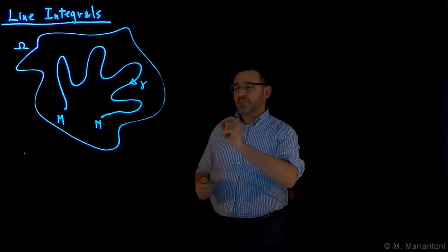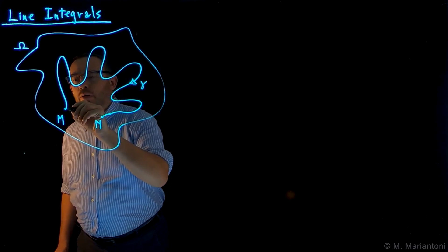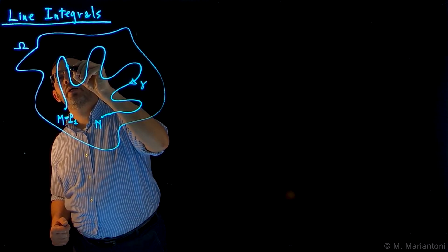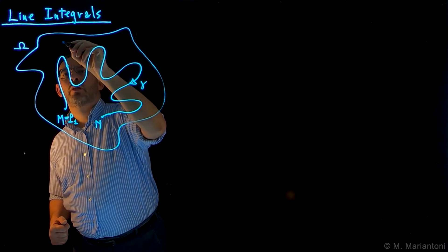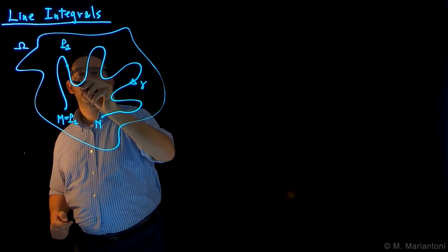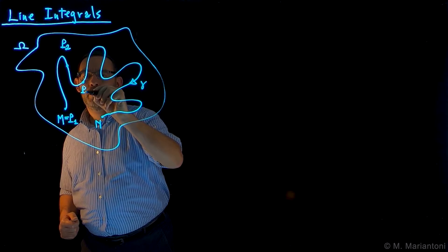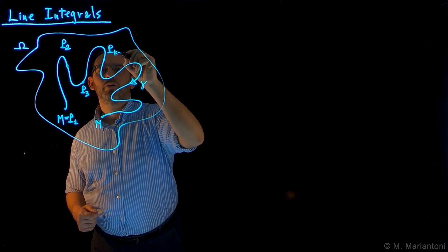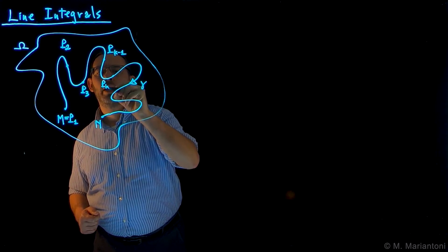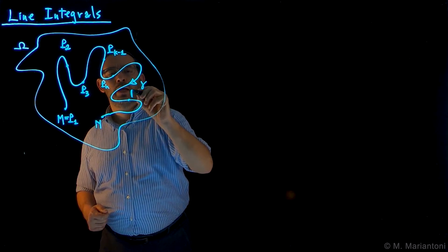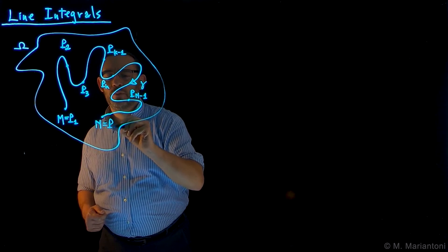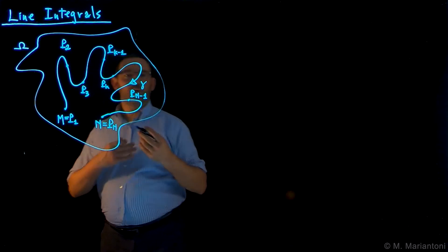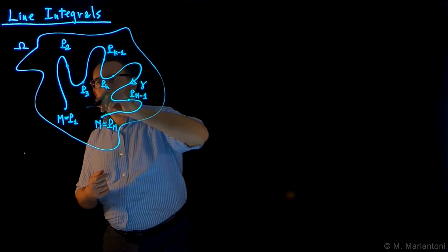Suppose now to identify a discrete set of points along this line. M coincides with point P1, then somewhere there would be a point P2, somewhere here a point P3, eventually a point P(k-1), a generic index, here a point Pk and a point P(n-1), and finally N coincides with capital Pn. So we have a discrete set of points, and we connect these points by means of straight lines which approximate this continuous line gamma with a series of segments attached to each other.